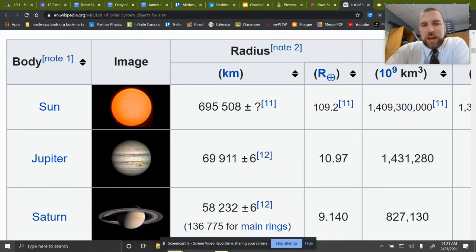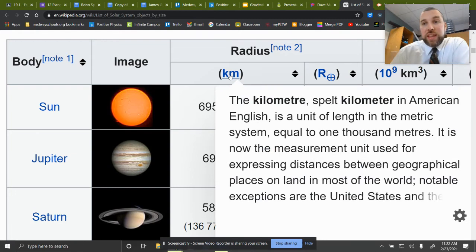So it gives us 69,911 plus or minus six. That's an uncertainty. We're not exactly sure exactly what it is, or it fluctuates. But 69,911 kilometers, right? So be careful of that.